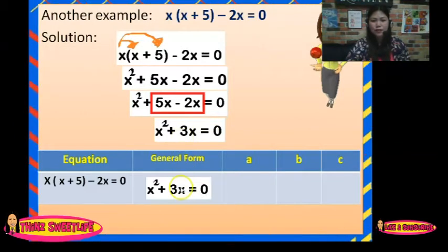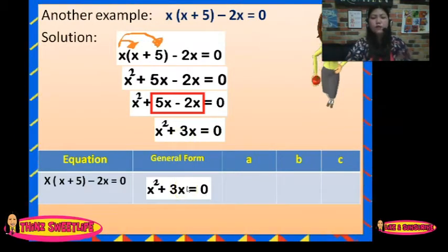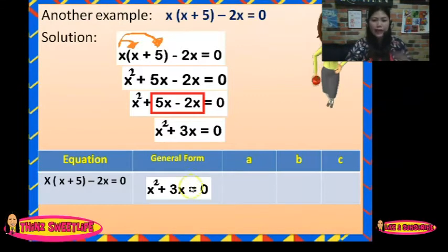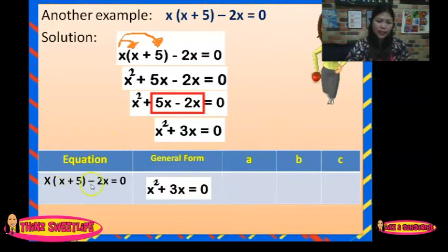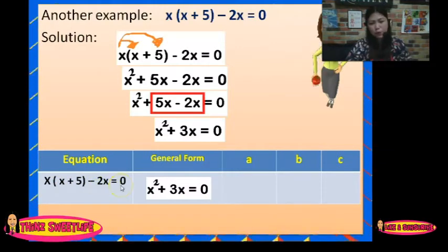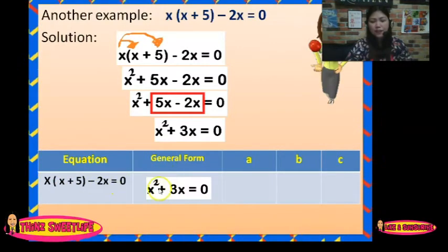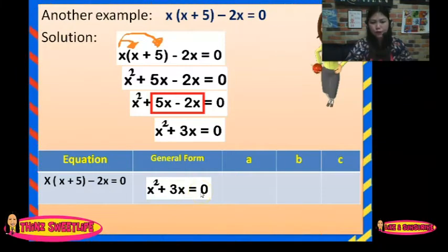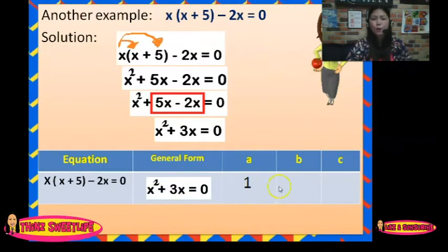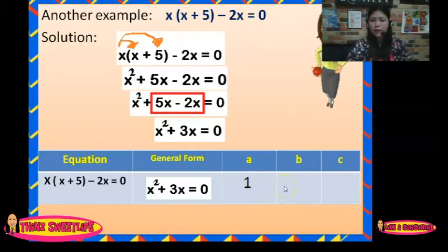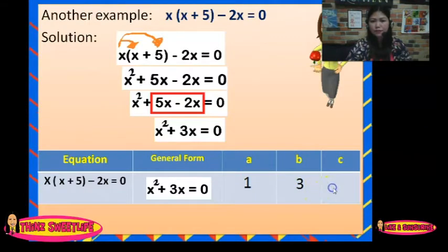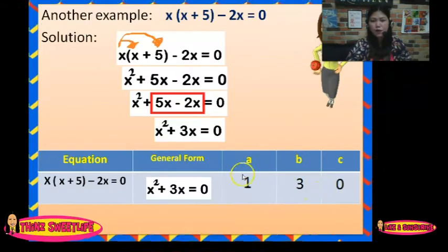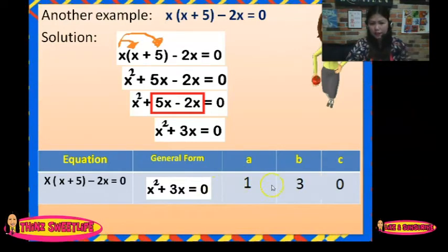From the equation x(x + 5) minus 2x equals 0, the general form is x squared plus 3x equals 0. So the A is 1, B is 3, and C is 0 because there is no constant term visible, so it's 0.